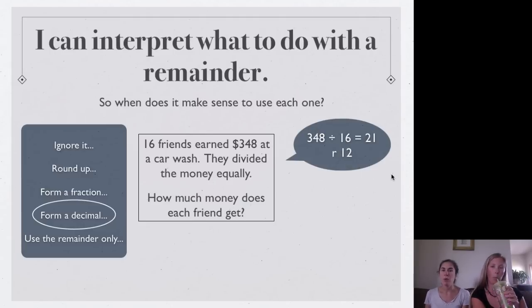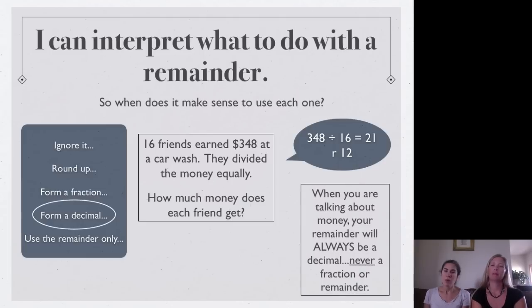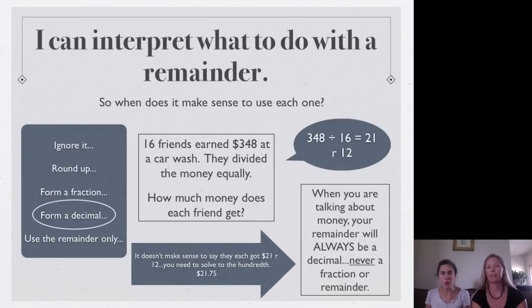So, if we do that problem, how much money does each friend get, we would get an answer of 21 with a remainder of 12. So, what we need to talk about is, okay, when you're talking about money, your remainder will always have to be a decimal. Never a fraction, never a remainder. Because that doesn't make sense. $21 and a remainder of 12? No.